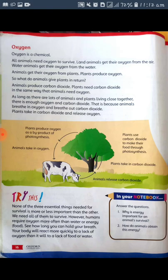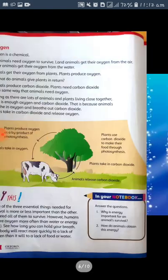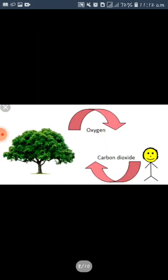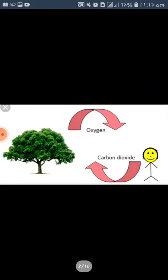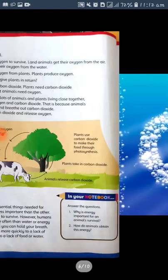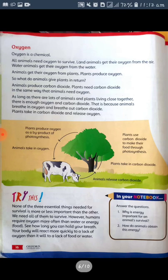You can see in this picture on page number 16 that we are taking in oxygen and giving off carbon dioxide. Plants produce oxygen as a by-product of photosynthesis.